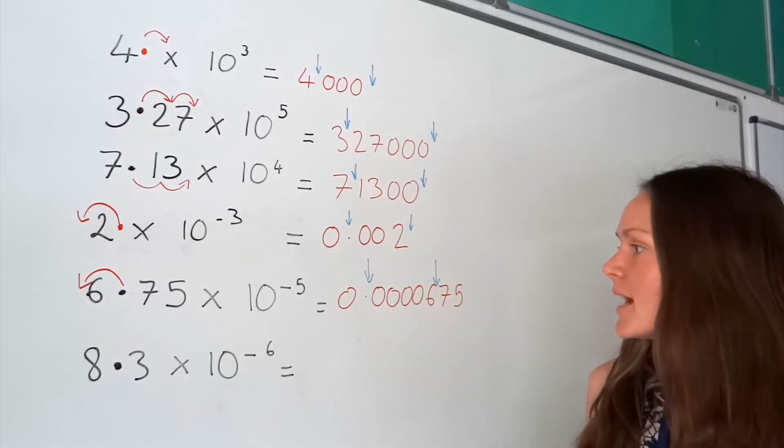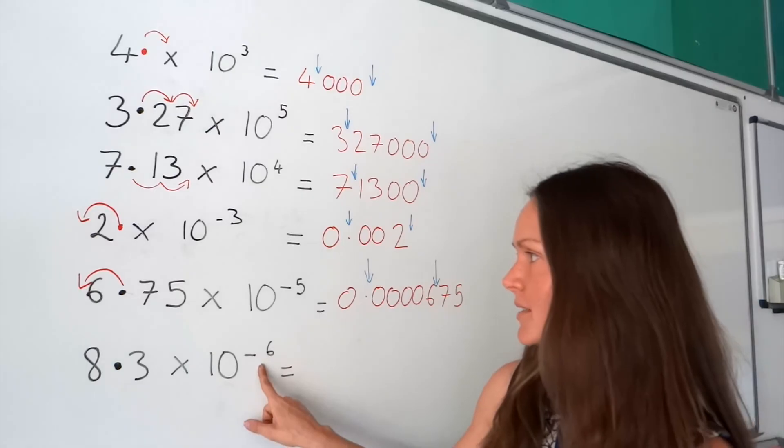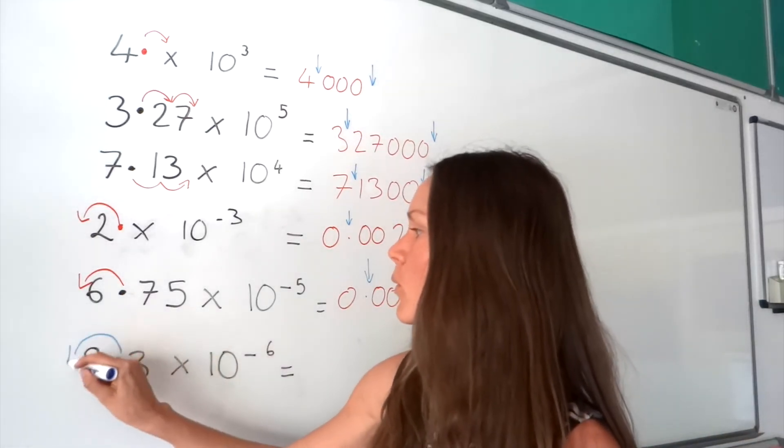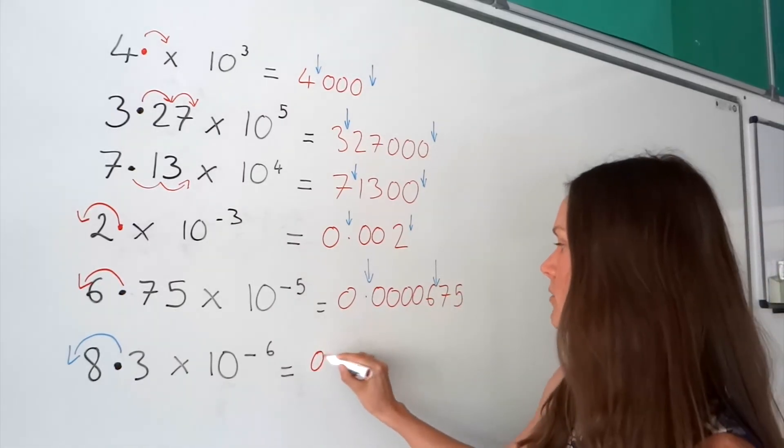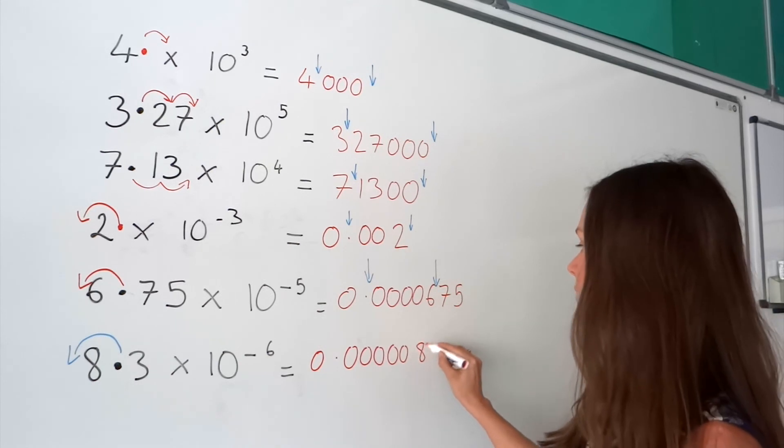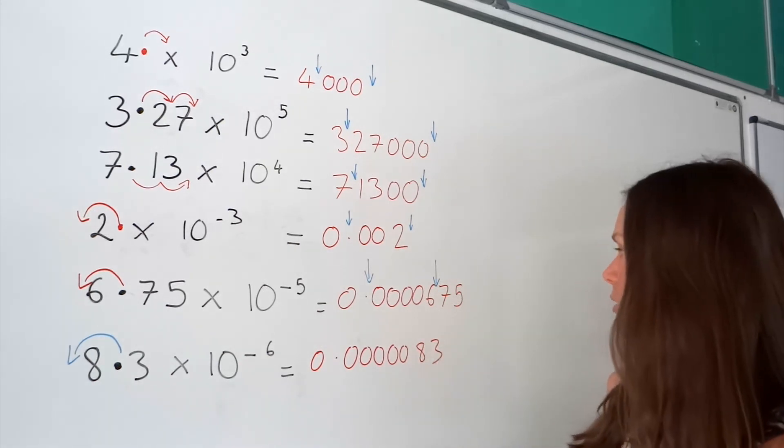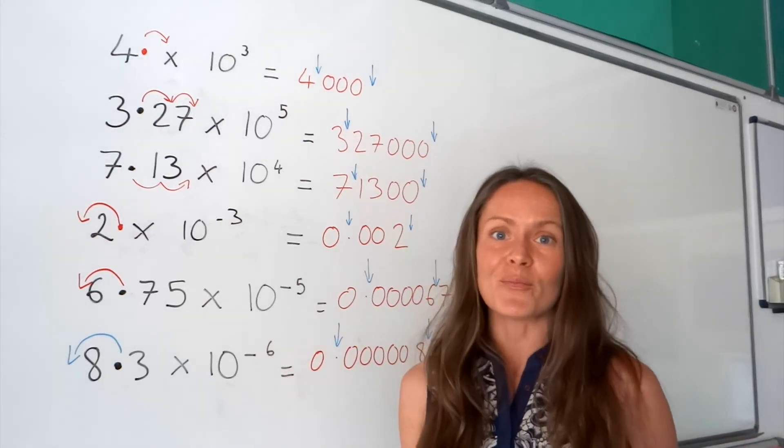And there we go. Now, the last one. This time, the decimal is moving six places. So, here, it's moving one. And then, I need to add five zeros. So, we've got 0.000083. Final check. The decimal used to be there. Now, it's there. And I've got six digits in between, which is correct. So, that's standard form.